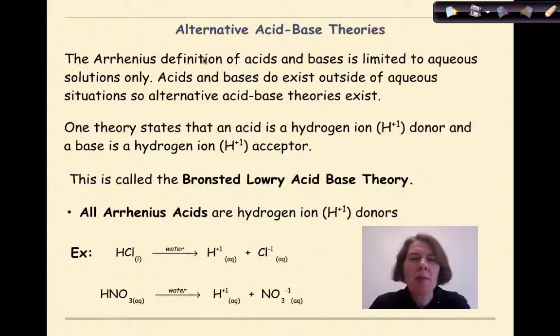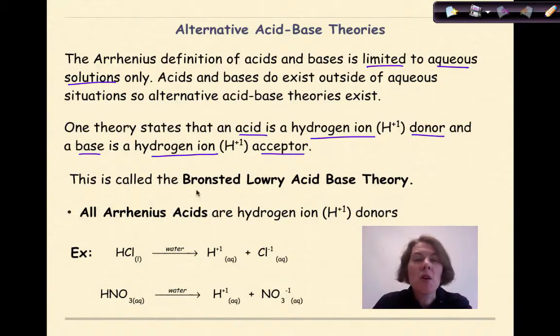Now let's talk about some alternative acid-base theories. The Arrhenius definition of acids and bases is limited to aqueous solutions only. Acids and bases do exist outside of the aqueous solution, so alternative acid-base theories exist. One theory states that an acid is a hydrogen ion H plus 1 donor, and a base is a hydrogen ion H plus 1 acceptor. This is known as the Bronsted-Lowry acid-base theory.